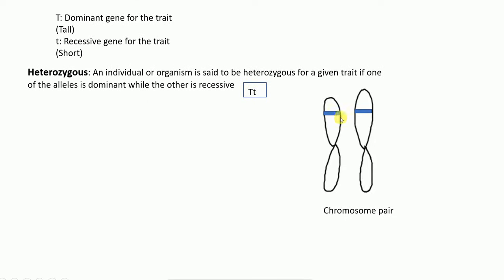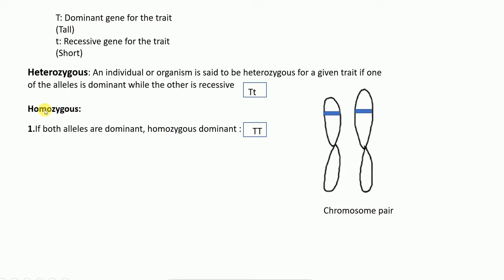Because capital T is the dominant allele, it will mask the expression of the protein coded by the recessive allele small t. Therefore the organism will be tall. The phenotype of this heterozygous organism will be tall, because the dominant allele capital T masks the expression of the recessive allele small t.